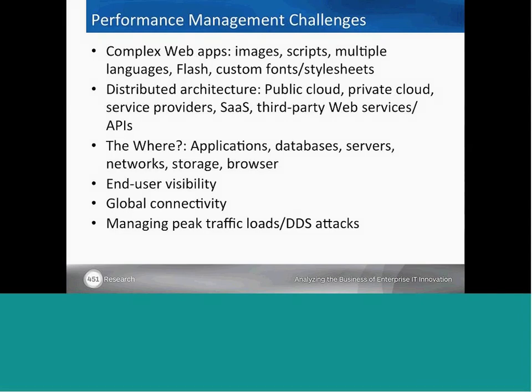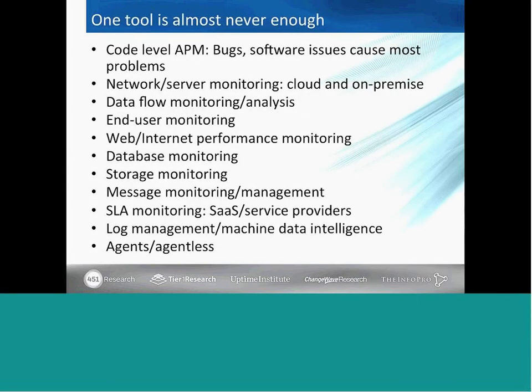If we go on to the next slide, we'll take a look at some of the types of tools we use to manage these issues. One tool is almost never enough — almost everybody I talk to has got at least three to five different tools in place, sometimes many more. It usually starts with code-level APM, Application Performance Management, because our research shows that bugs and other software issues are still causing most of the problems — 70 to 75 percent is the number we see coming right from the software.